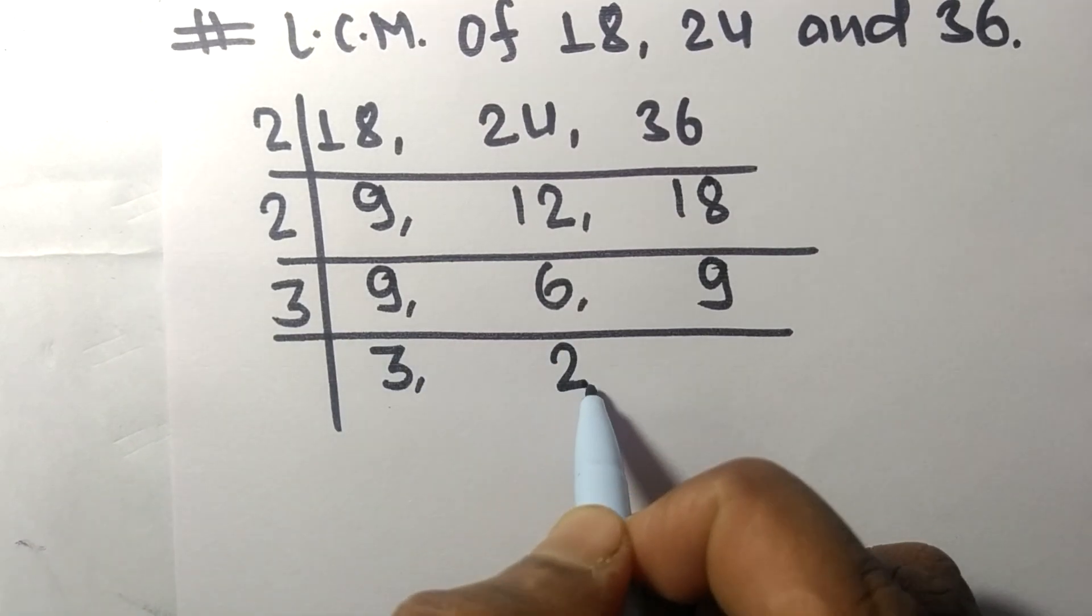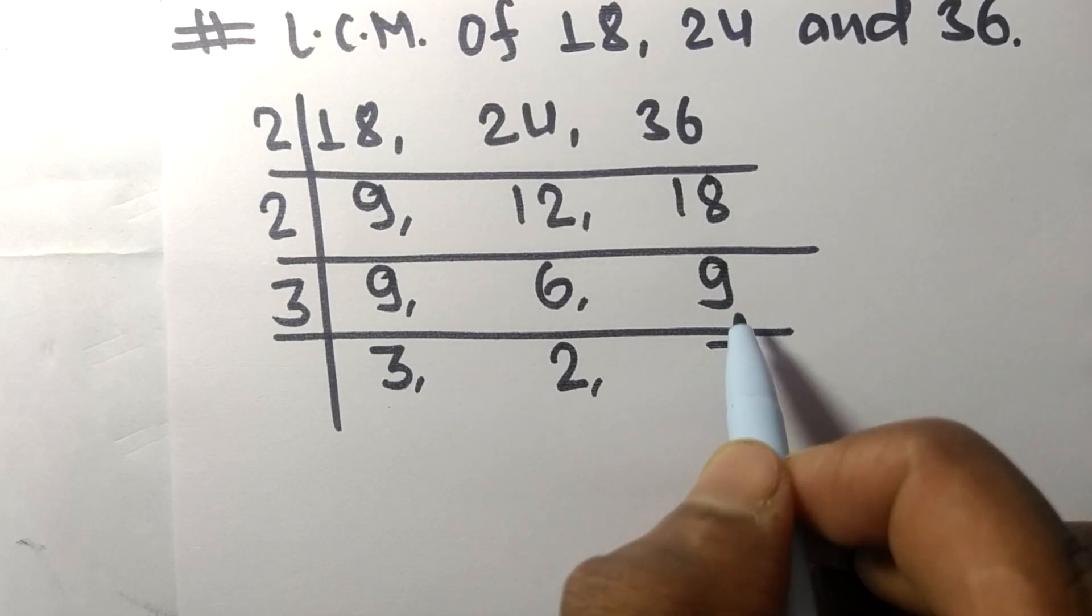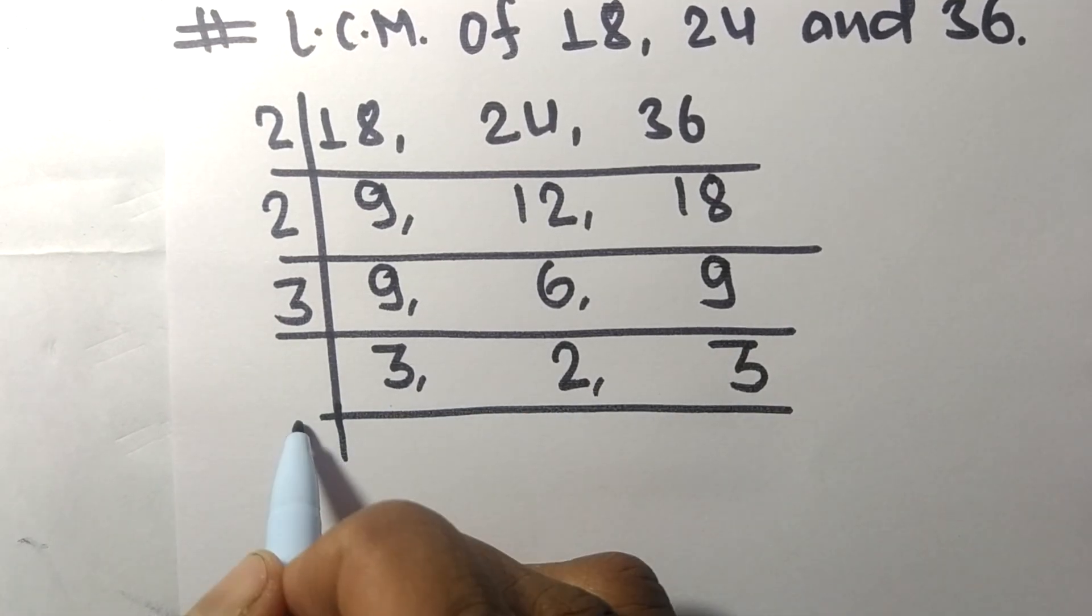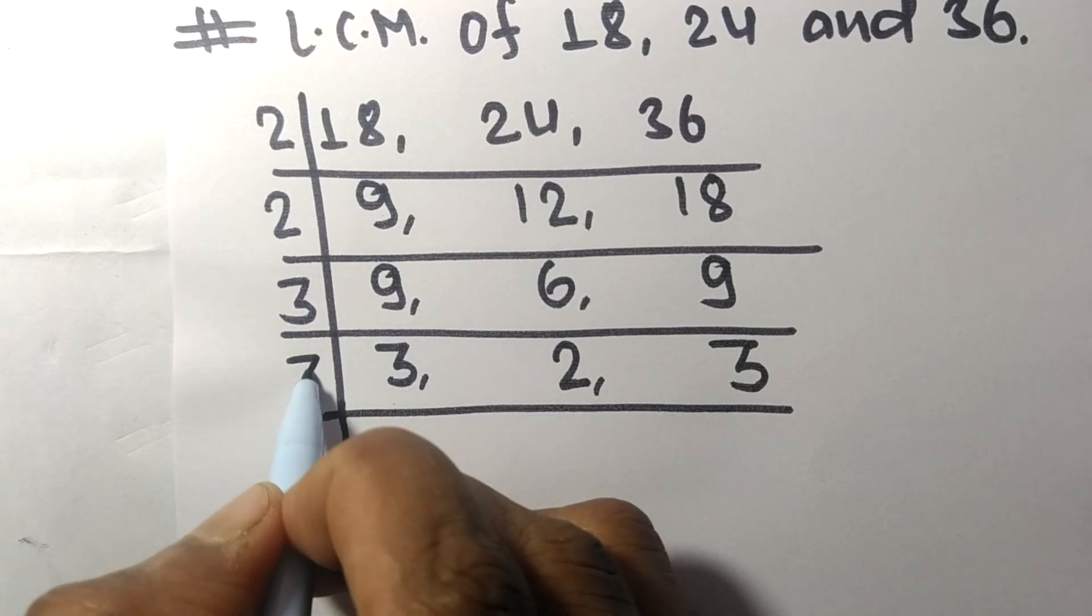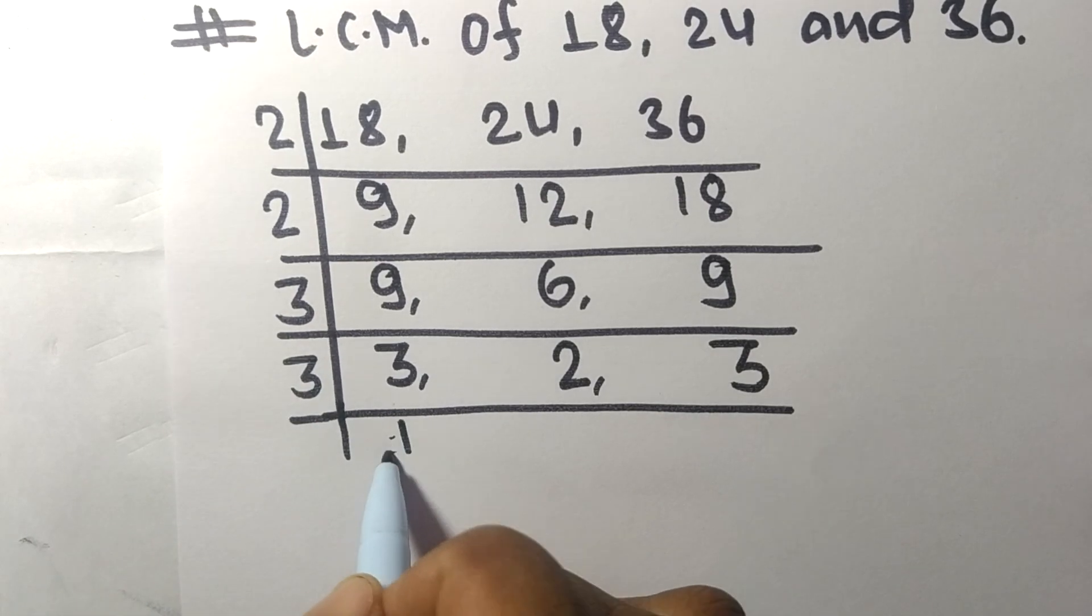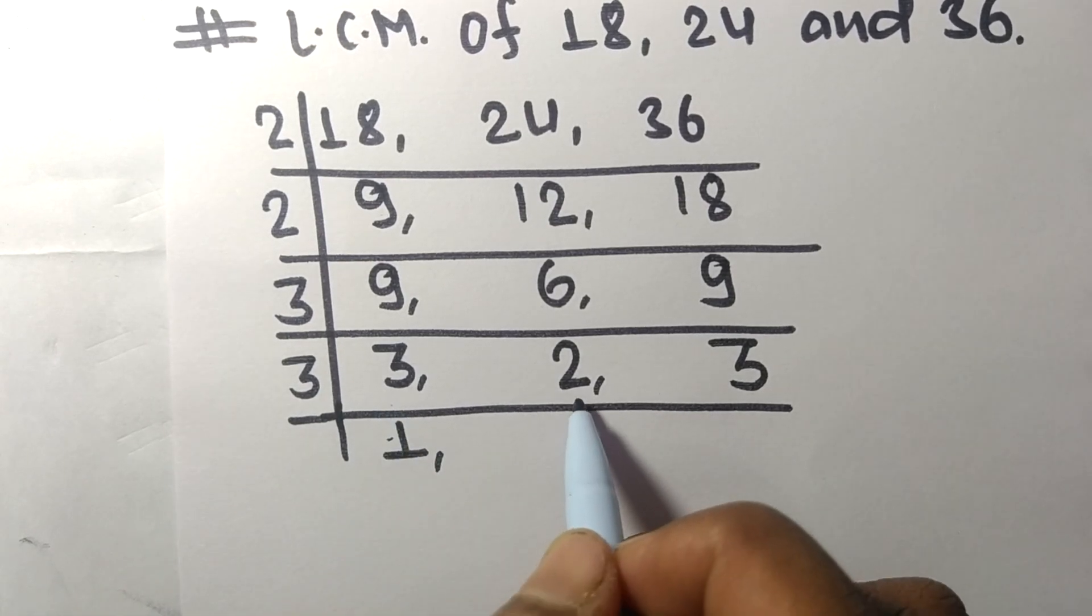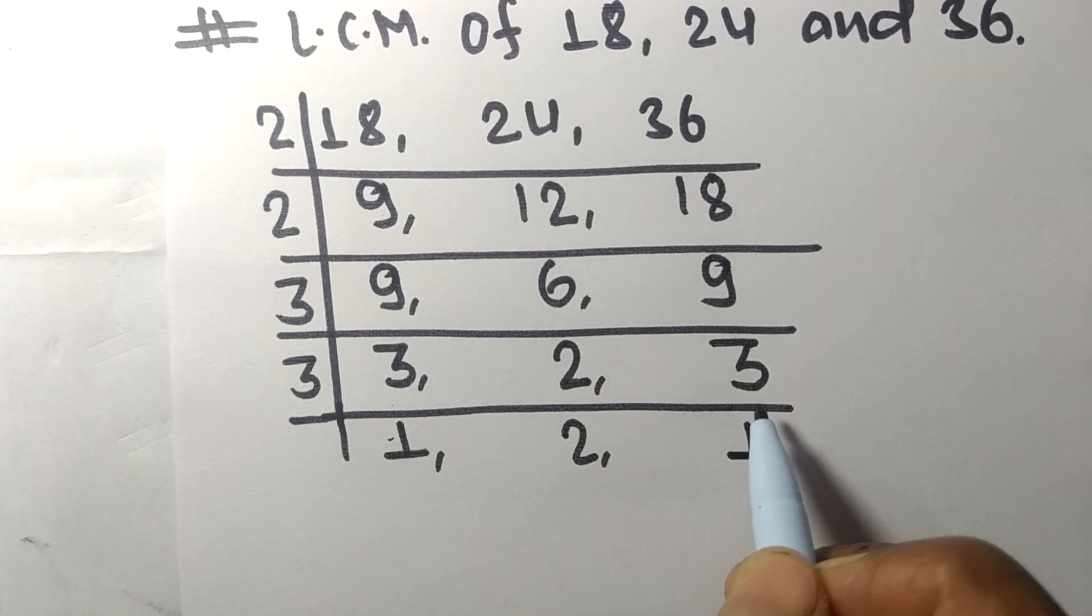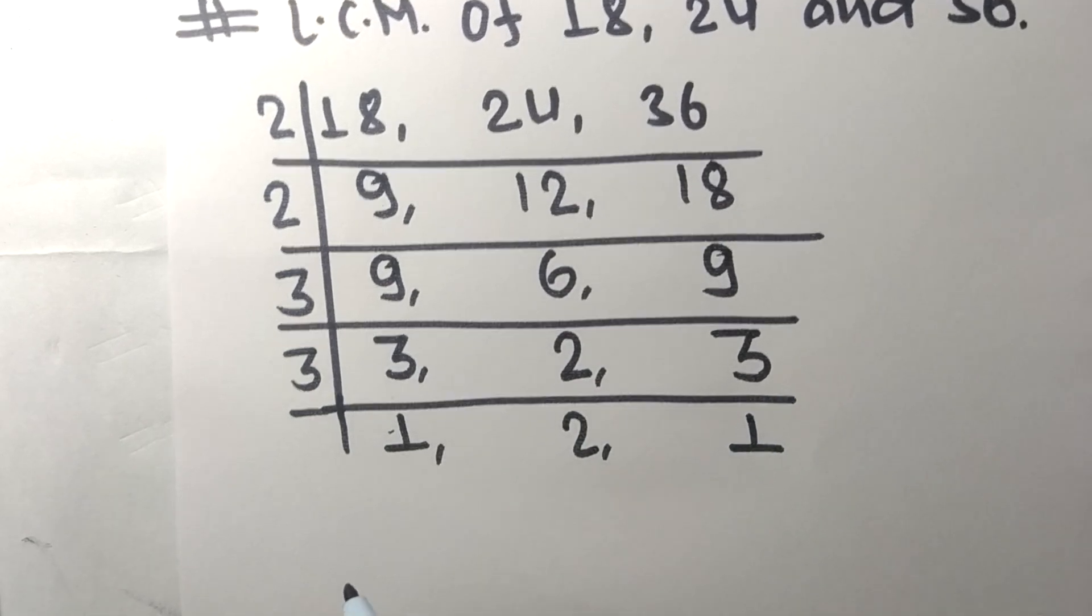Now again both 3s are divisible by 3. 3 times 1 means 3. 2 is not divisible, so it stays the same. 3 times 1 means 3.